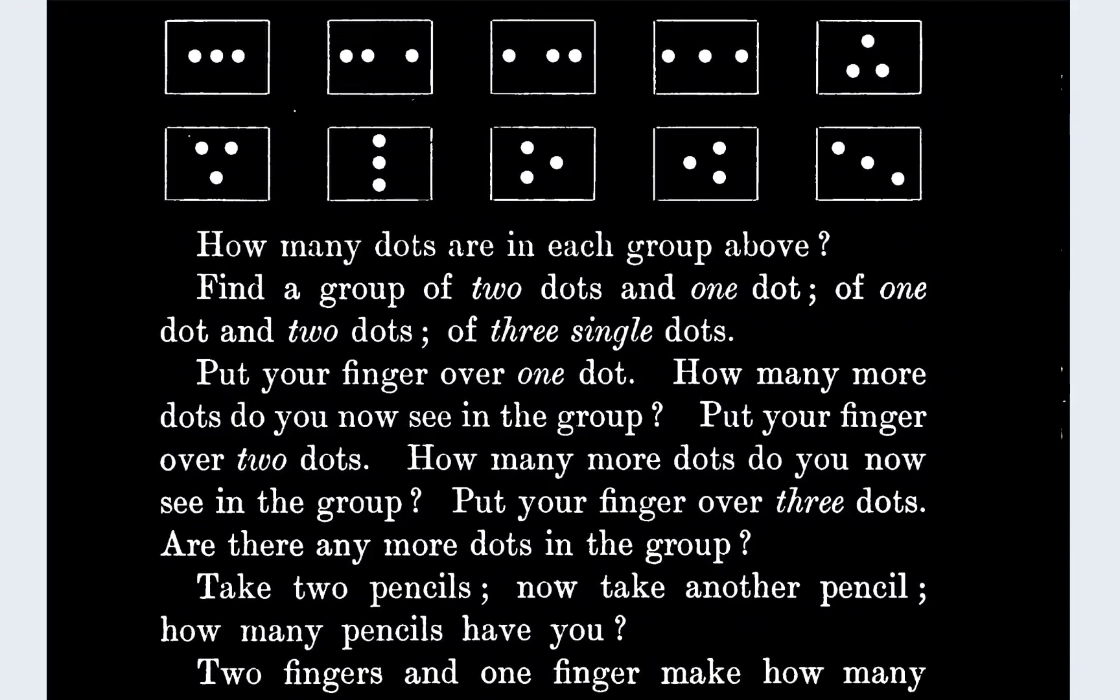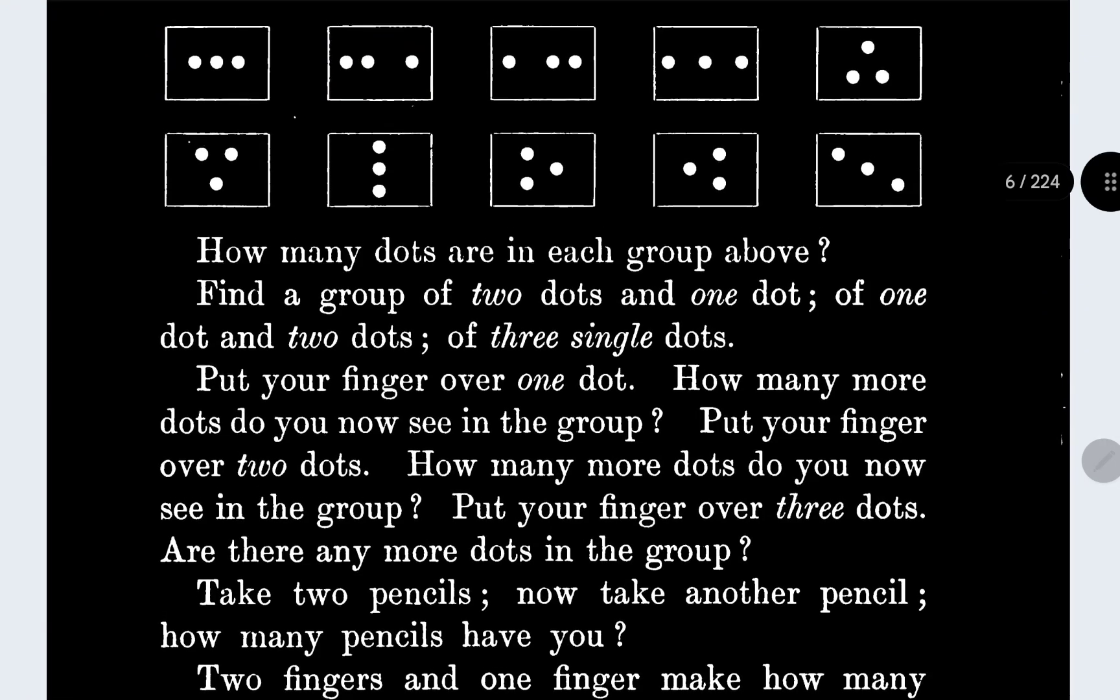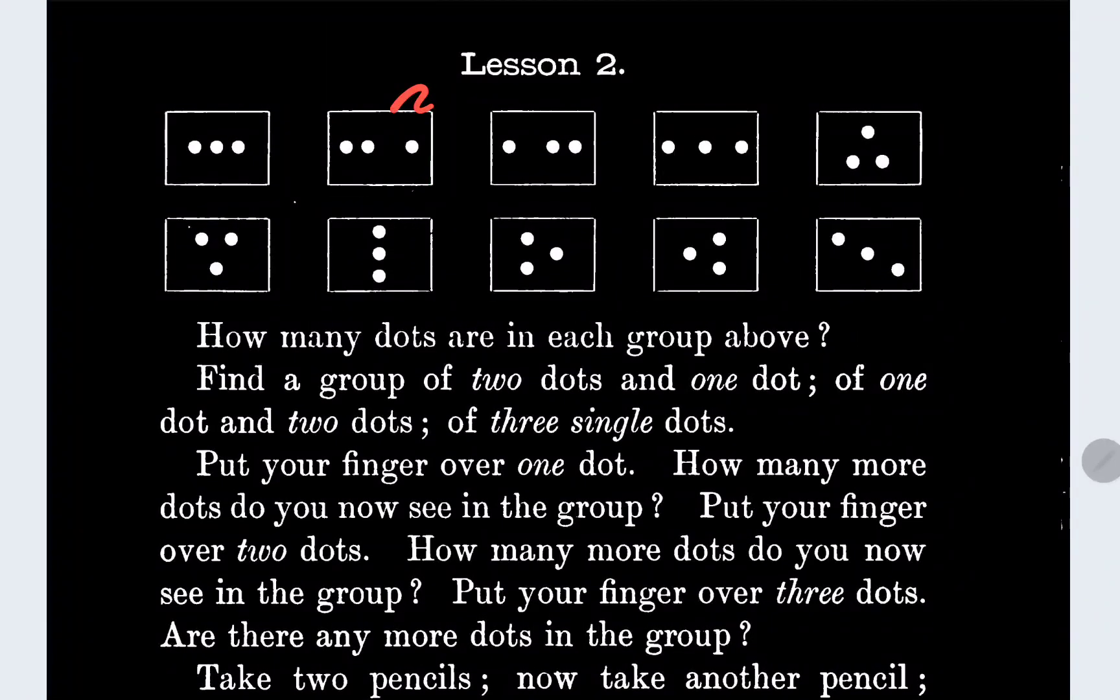Hold on, a group of two and three. Oh, where did my thing go? I lost it. I want that one. Okay, a group of two and three. Right there, that's the two and three.